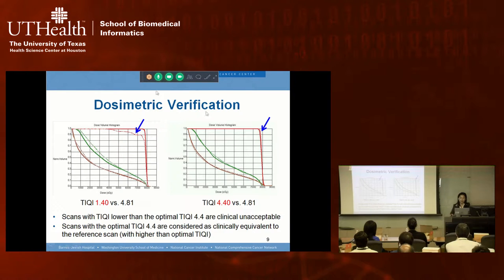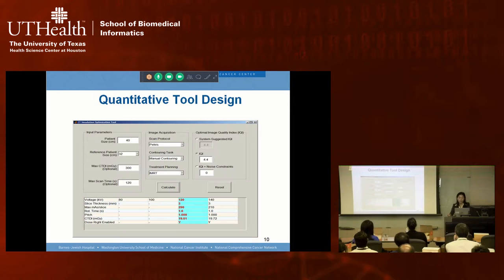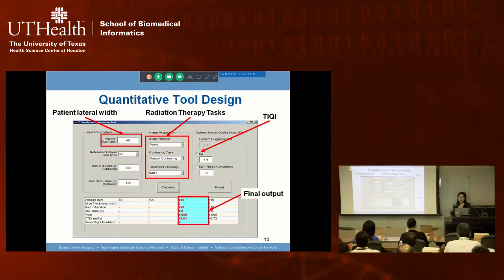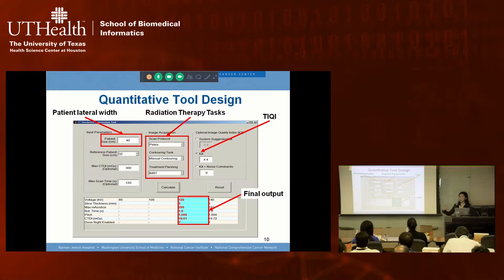Dosimetric verification confirms that once the task image quality index is reached, the treatment plan will be accurate. A lower IQI yields insufficient tumor coverage, but once the target image quality index threshold is met, the treatment plan is accurate. Based on this study, we developed a quantitative software tool that uses patient lateral width as an index to calculate all possible CT scanning protocols reaching the required image quality, selecting the one yielding the minimal dose.